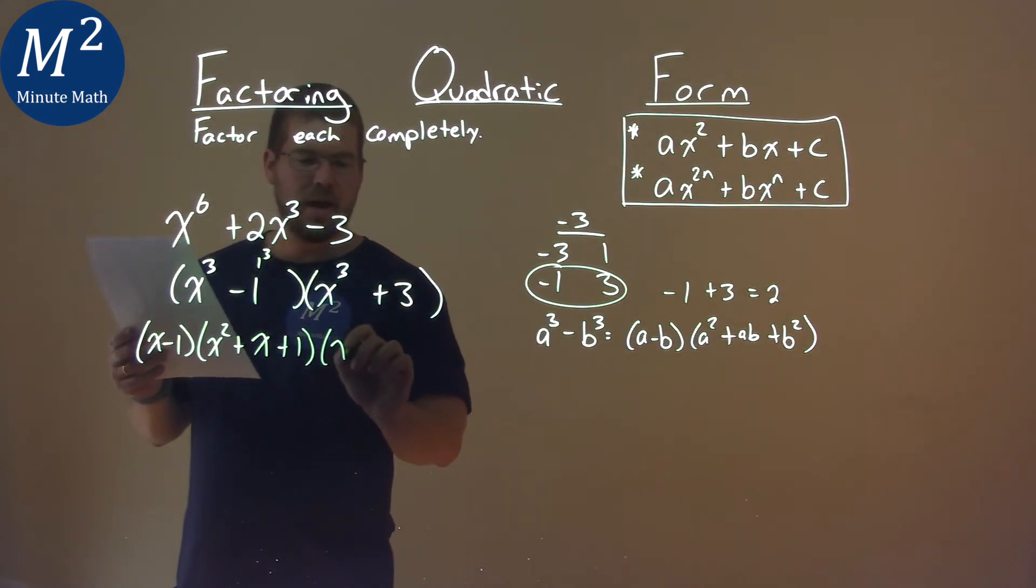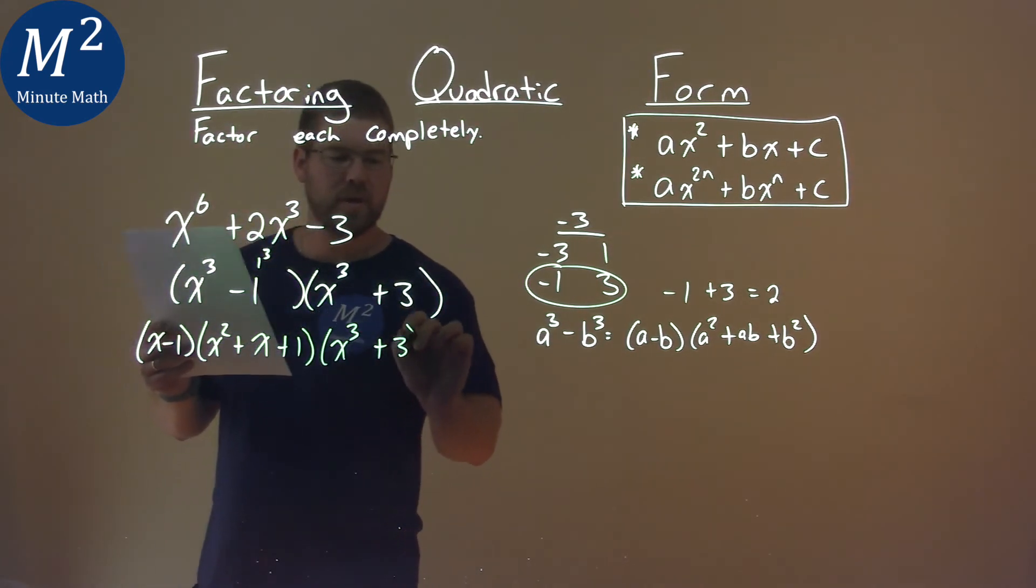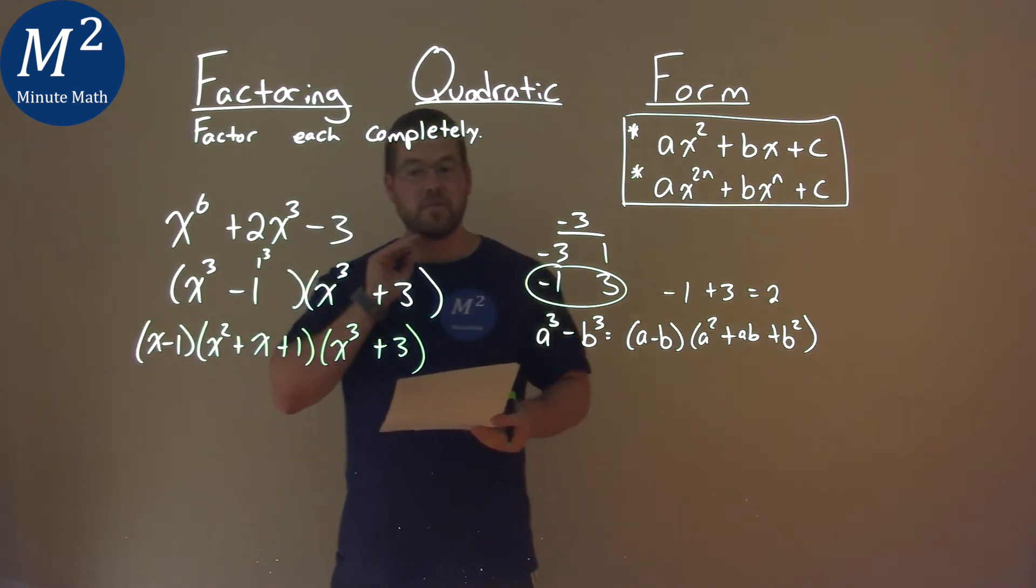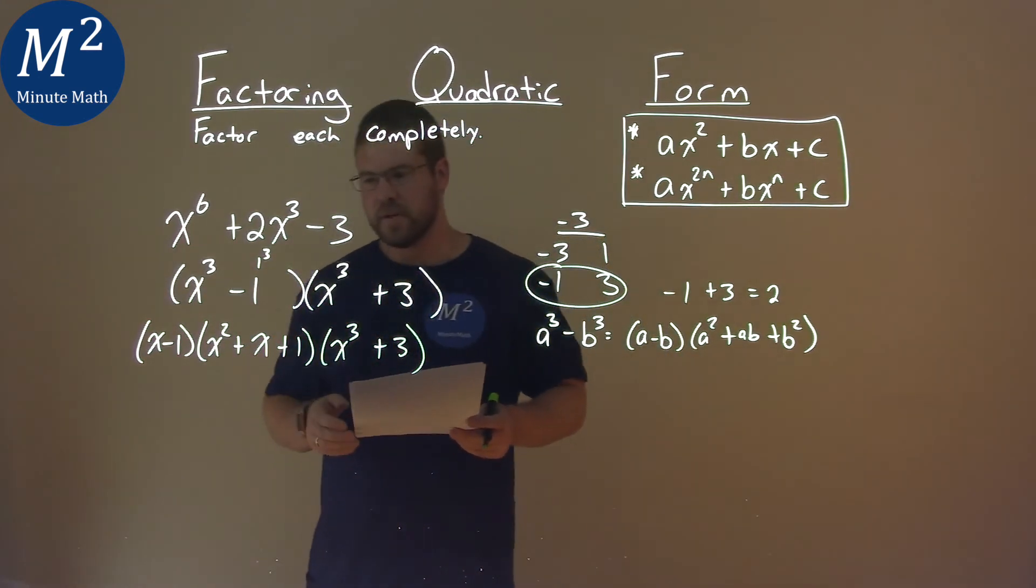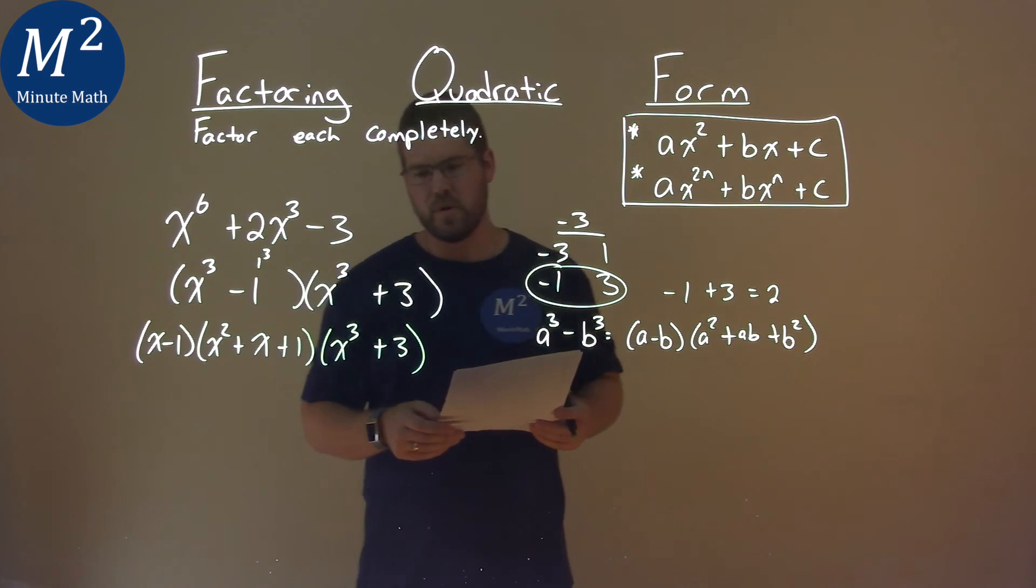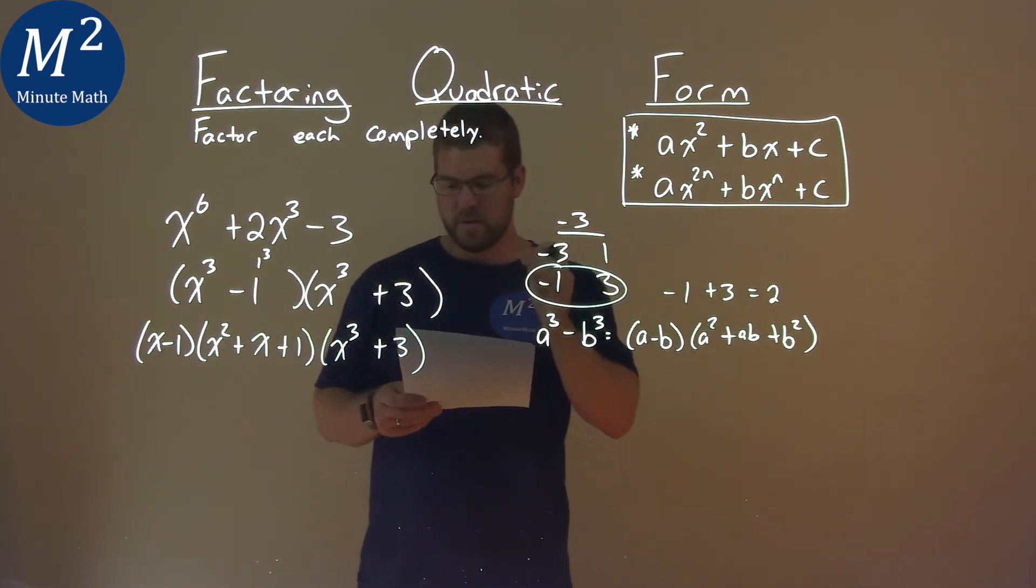Then bring down the x to the 3rd plus 3. And so our final answer here is x minus 1 times x squared plus x plus 1 times x to the 3rd power plus 3.